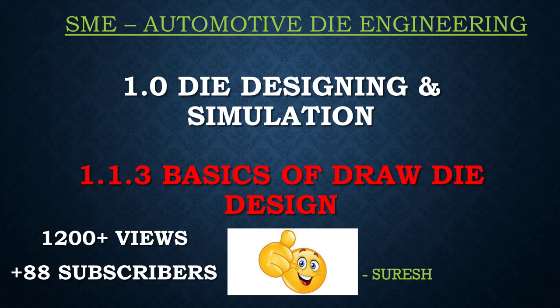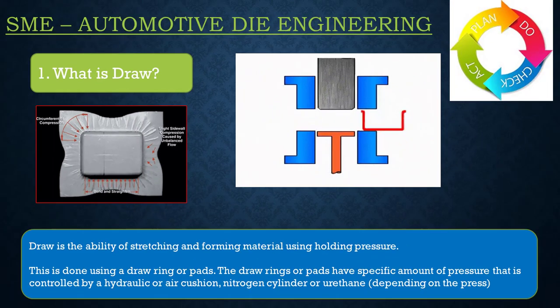Hello friends, this is Suresh, SME in automotive die engineering. Today's session is basics of draw die. Draw is the ability of stretching and forming material using holding pressure. This is done using a ring or pads. The drawing pads have a specific amount of pressure that is controlled by hydraulic or air cushion, or nitrogen cylinder or urethane, depending on the press and die design.